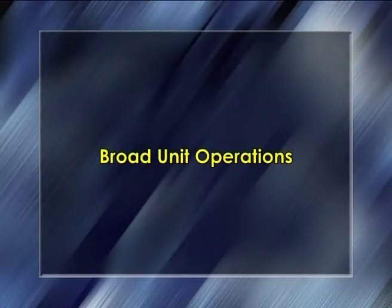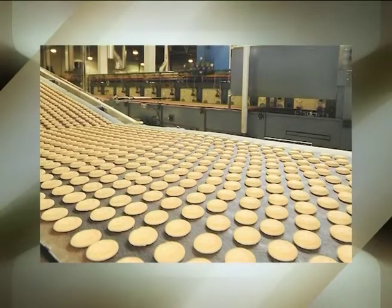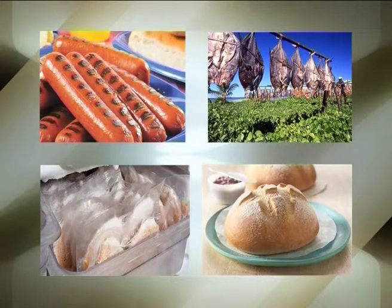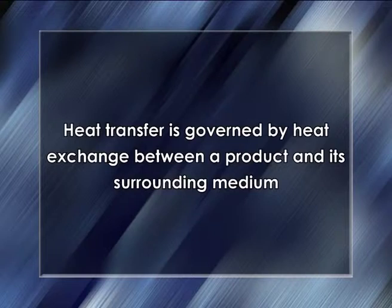The first broad unit operation is heat transfer. Heat transfer is one of the fundamental processing principles applied in the food industry, with applications in thermal processing, evaporation and drying, freezing and thawing, and baking and cooking. Heating is used to destroy microorganisms, prolong shelf life through destruction of certain enzymes, and promote acceptable taste, odor and appearance. Heat transfer is governed by heat exchange between a product and its surrounding medium, and generally increases with increasing temperature difference.